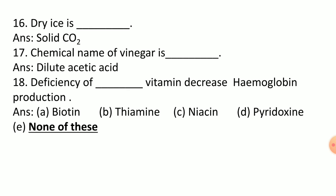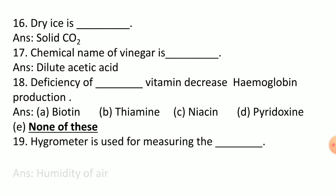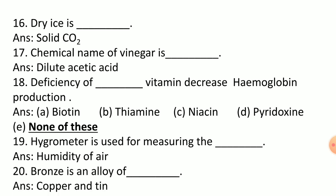Options: biotin, thiamine, niacin, pyridoxine, none of these. Hygrometer is used to measure humidity of air. In the air humidity, we use a hygrometer for measurement. Bronze is an alloy of copper and tin. This has been asked a lot of times in past papers.